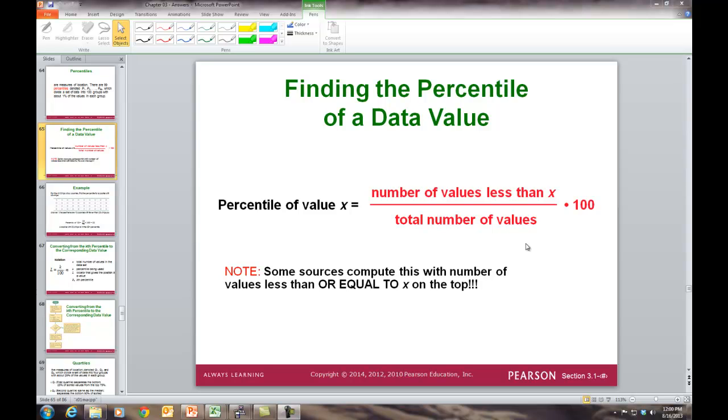For instance if you got a 73 on a test and you want to know what percentile you are in, you would count up all the number of test scores that were less than 73, divide that by the total number of test scores in your sample, say your class or whatever, and then you would multiply that by 100 and that would give you your percentile. So it is basically the percentage of people that scored less than you on that test.